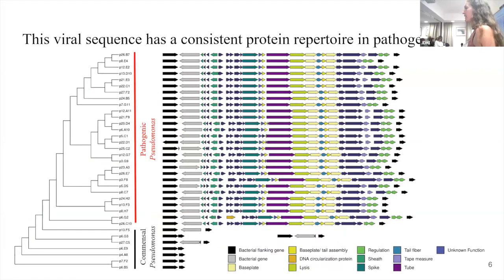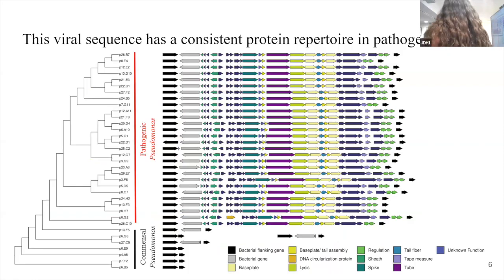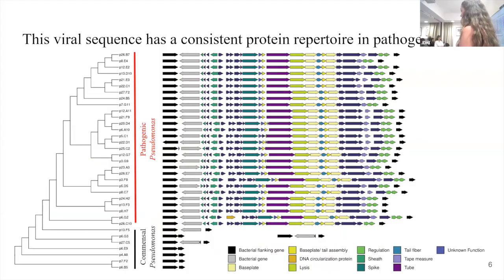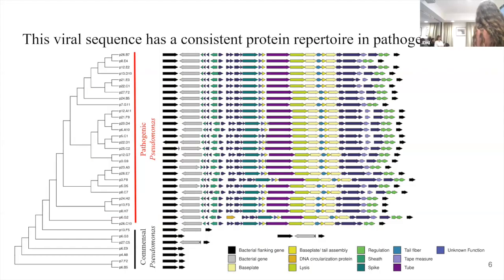We wanted to investigate what this highly conserved viral sequence in the pathogens was. We found that the viral sequences, or this genomic island, were integrated between the same flanking genes in the bacterial genome, and was highly conserved in its gene content, synteny, and size.